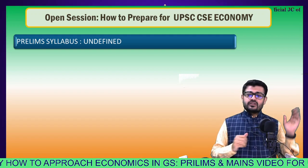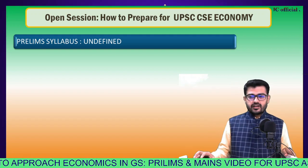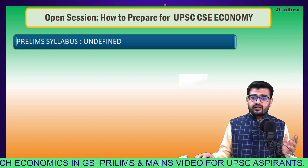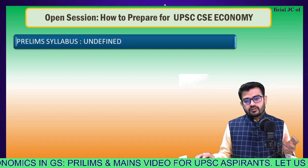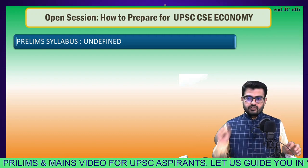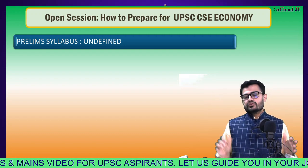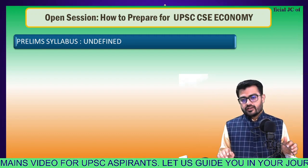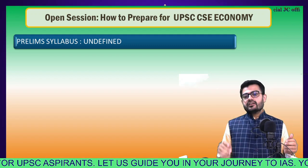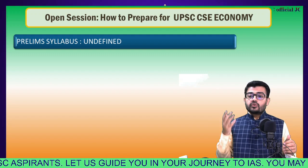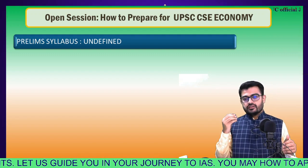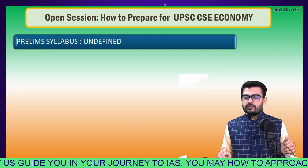Why? Because the prelims syllabus is entirely undefined. There are 6 to 7, perhaps 8 with current affairs added, points of economy, and it is very open — umbrella terms are given. Poverty — entire books on poverty can be read. Inclusive development, inclusive growth — entire segments are there. People read plenty of books on economic policy, monetary policy, and industrial policy. So the prelims syllabus is not defined, and that's where it gives maneuverability and a wider scope of interpretation for asking questions.